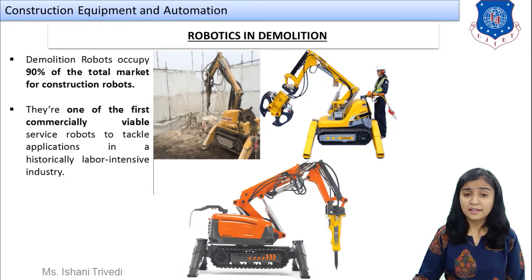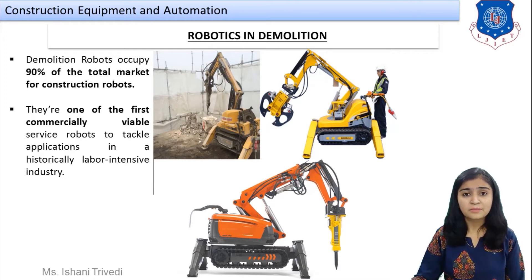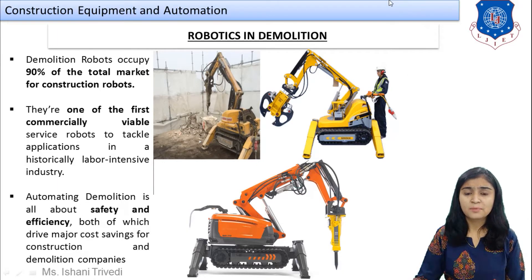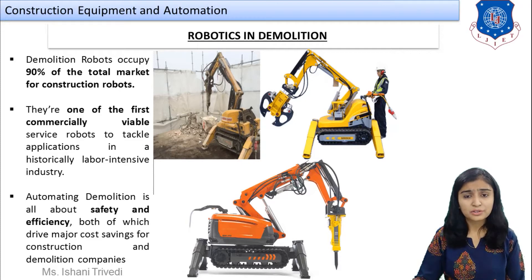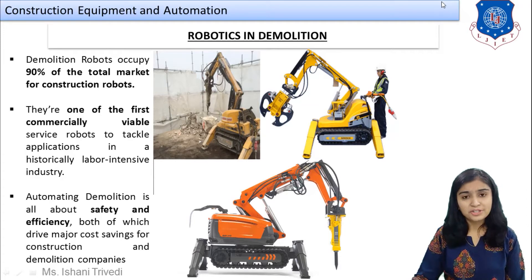Just like brick laying, demolition is also a laborious work requiring many laborers, and safety gets endangered during demolition. The demolition process is even more tedious and time-consuming than brick laying. The first commercially available construction robots were demolition robots. Automating demolition is about safety and efficiency, both of which drive major cost savings — although initial costs are higher, safety increases and overall cost reduces over time.